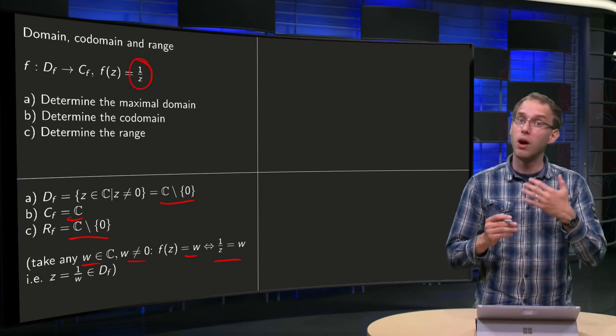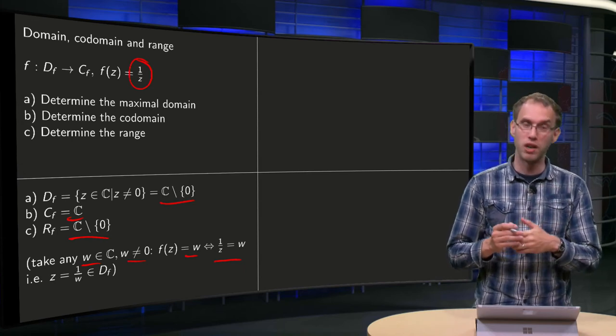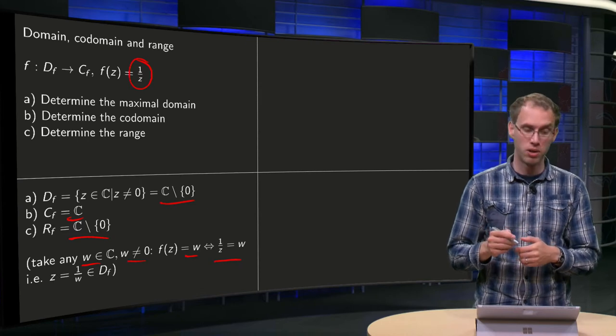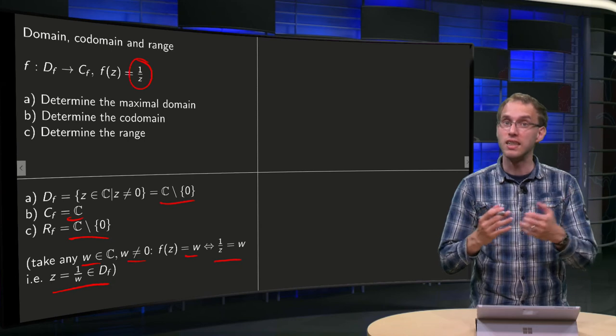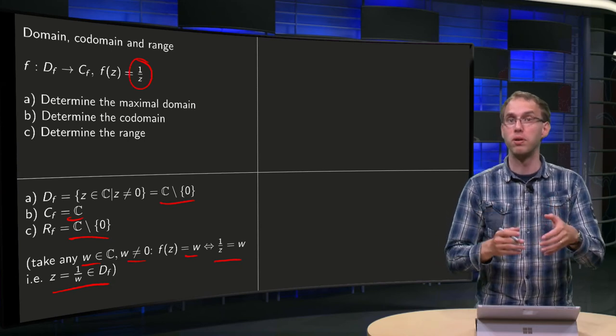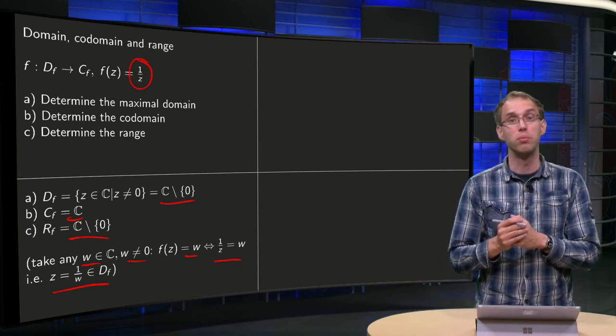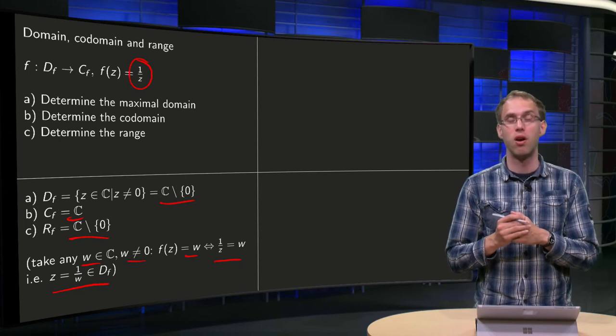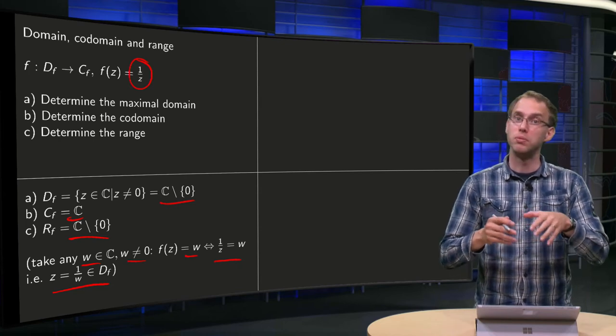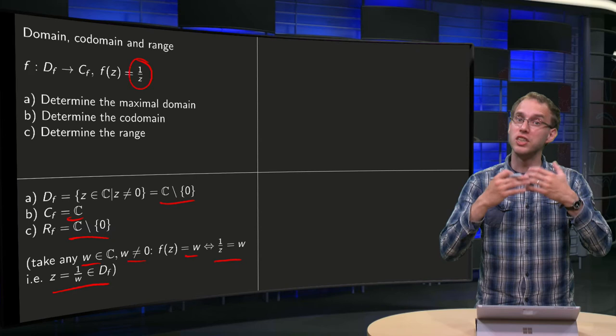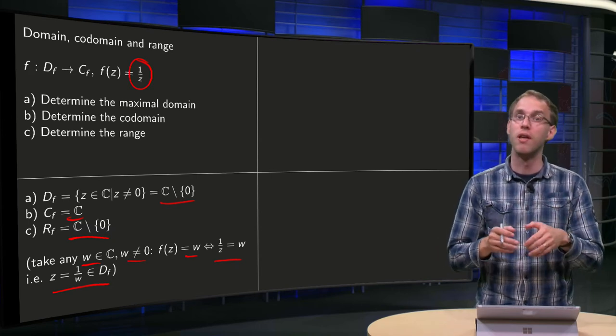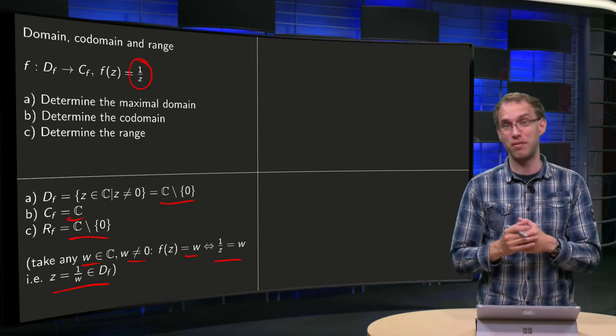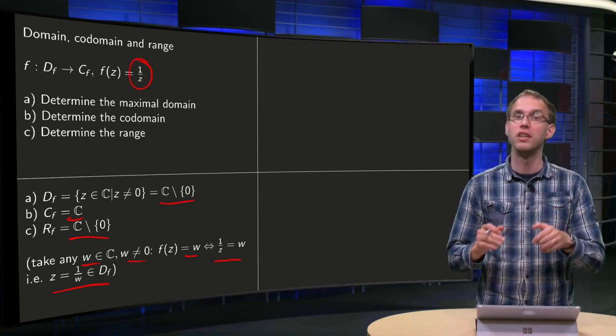Now we know that w is not equal to 0 and z is not equal to 0, so we can compute z equals 1 over w and that is indeed some complex number, so in particular this 1 over w will be in the domain of the function f, which means that you can reach any w by the appropriate z equals 1 over w. So in this case you can in fact find the range, it is all of C except for 0.